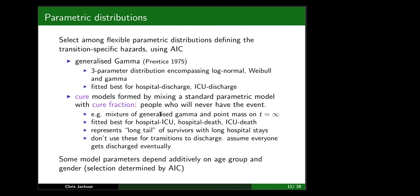Another model family we considered is a cure model — a kind of mixture model. It uses a standard parametric model for people who will eventually experience the latent event, but includes a subset who will never have this event: a cure fraction, which is a point mass on an event time of infinity. Empirically, this style of model fitted best for transitions to ICU and death, representing a long tail of people at lower risk who stay in hospital a long time but won't die and won't go to ICU.